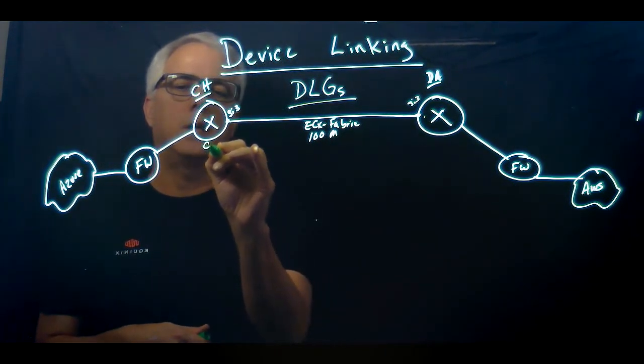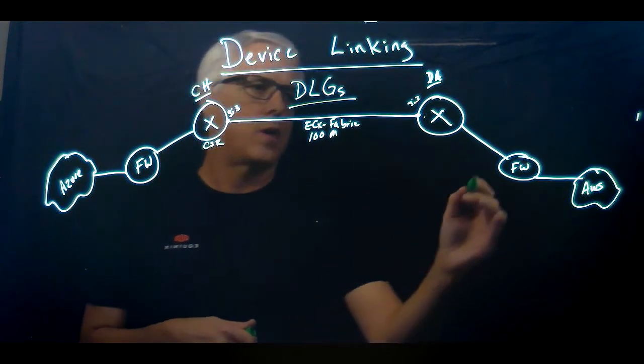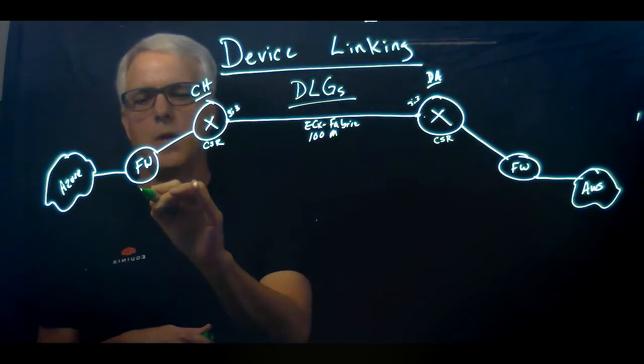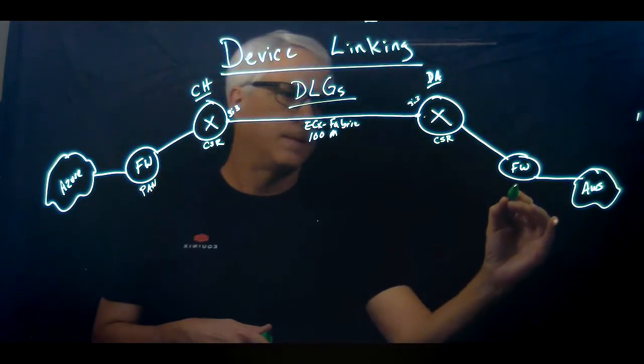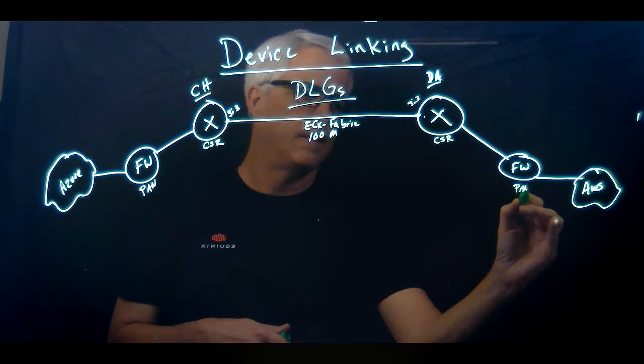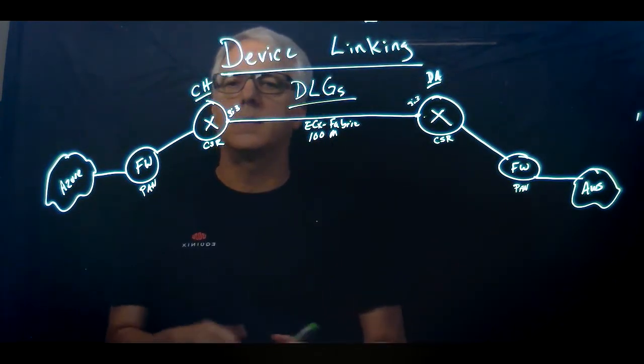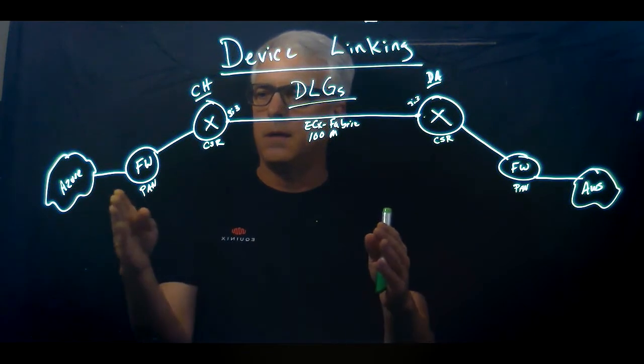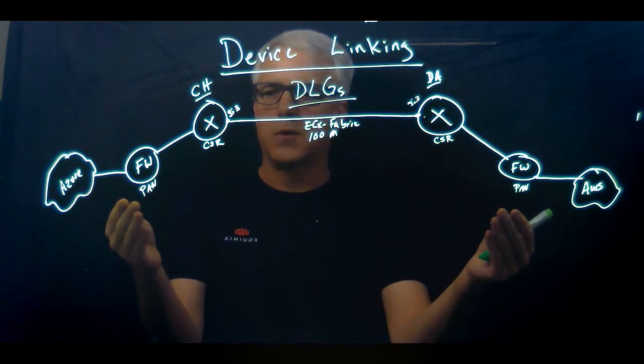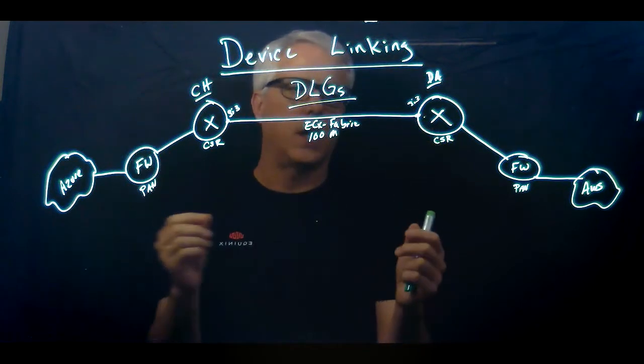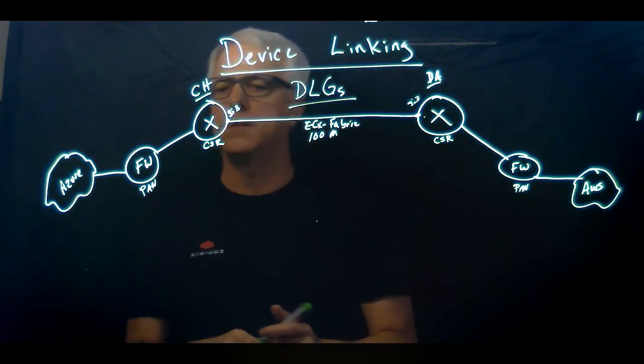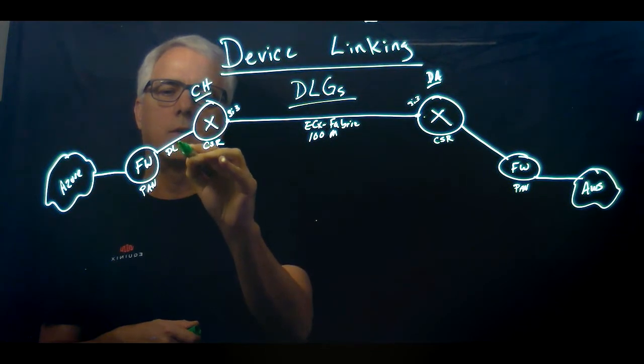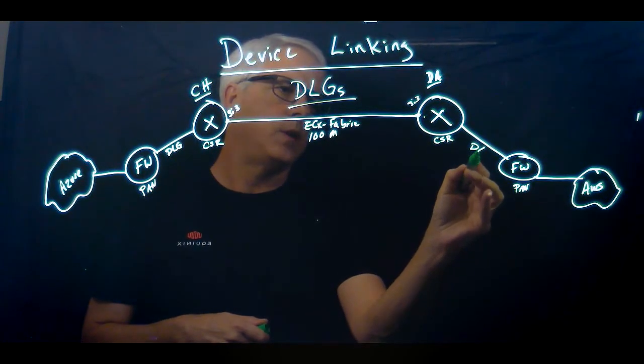In this case, this might be a CSR, just a regular Cisco router here. This might be a Palo Alto firewall. So what I want to do is take this WAN connection and join the LAN infrastructure on both sides of the equation. So I would create another device link group here, another device link group here,